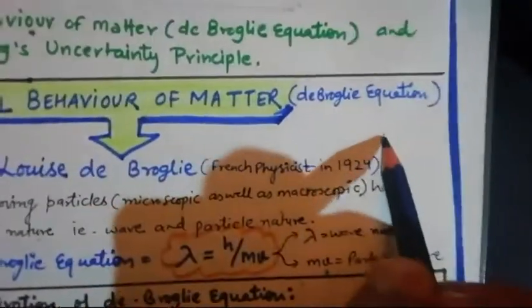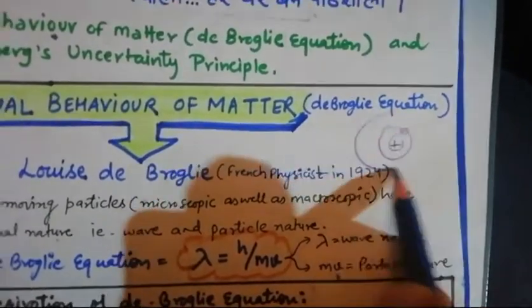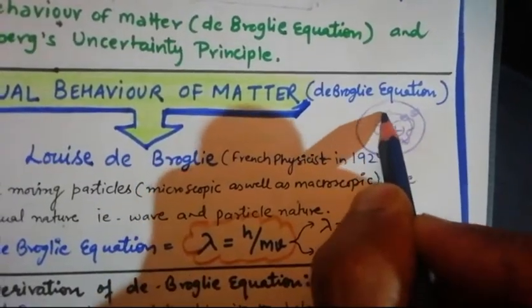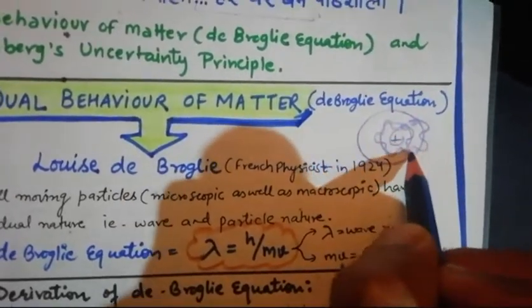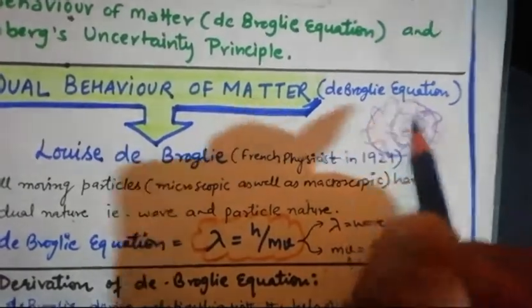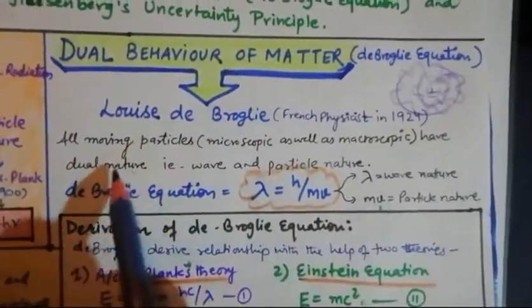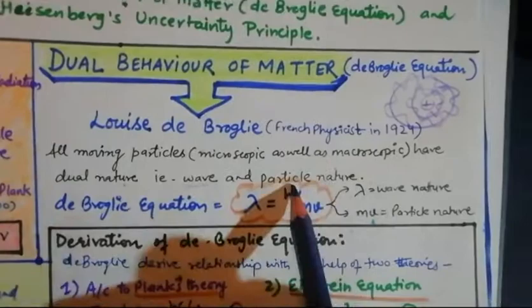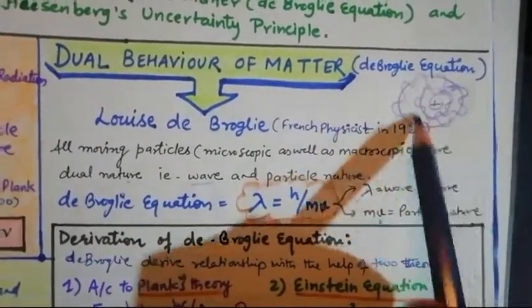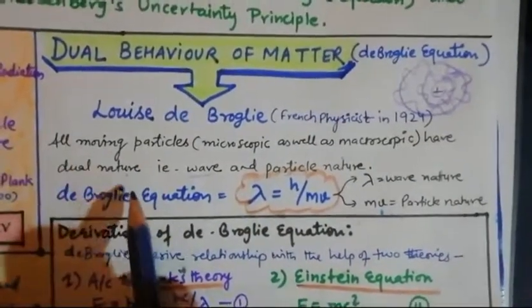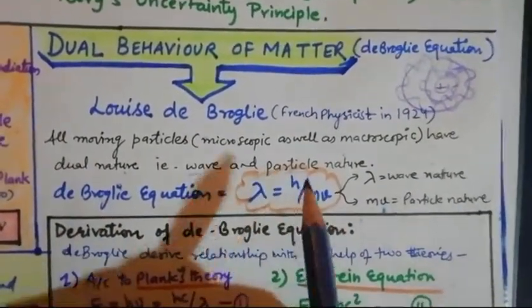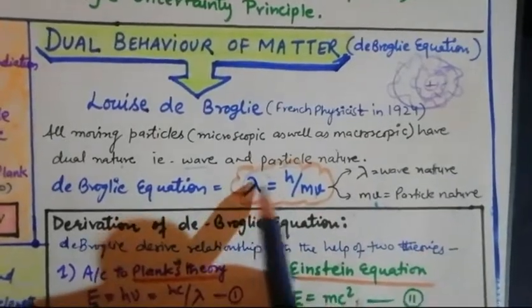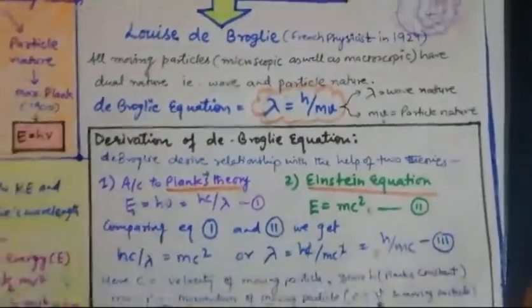As Bohr described, electrons revolve around the proton in a fixed path and are continuously moving. De Broglie showed that an electron is also moving like a wave. In electromagnetic radiation we discussed that a wave has two properties: electric and magnetic. So microscopic particles have wave nature as well as particle nature — particle nature means it is continuously moving with momentum. He stated that lambda = h/mv, where lambda represents wave nature and mv represents particle nature, which is also called momentum.